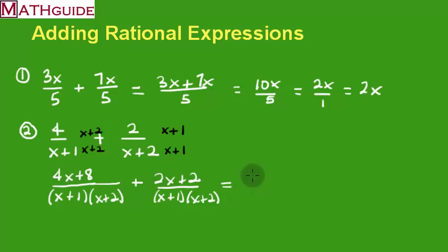4x plus 2x is 6x. 8 plus 2 is 10. All over our common denominator x plus 1 times x plus 2.